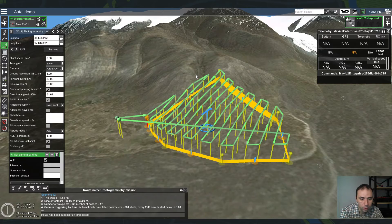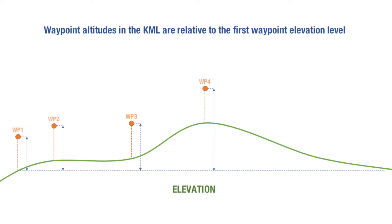Now we have a file. By default, drones count their altitude relative to the GNSS initialization point. In our KML we export altitudes relative to the elevation level under the first waypoint. So it is very important to put your drone near the first waypoint and take off from this position — that will guarantee that your drone will follow the planned altitudes.